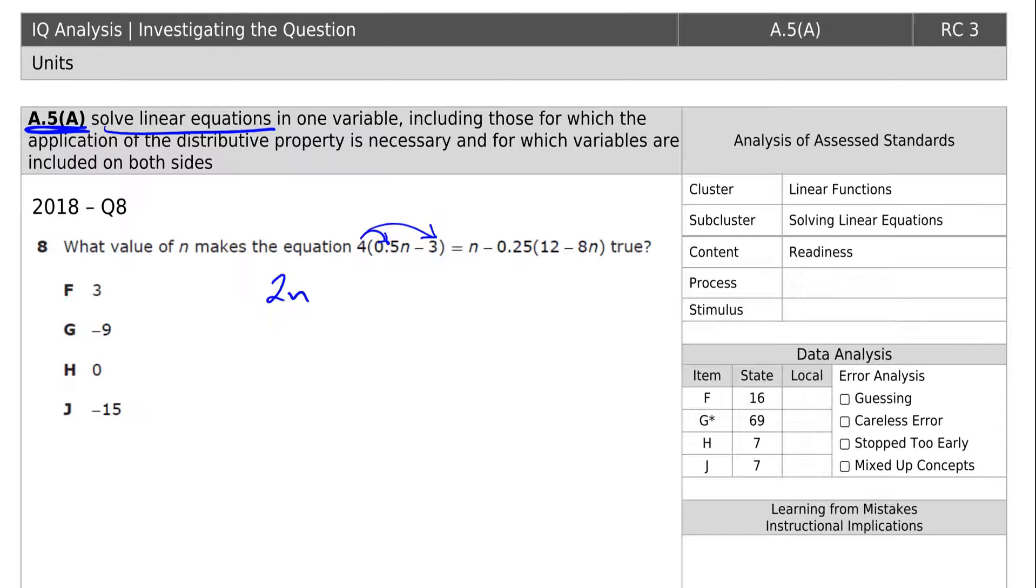Of course, you'll have your calculators, so you could type that into your calculator and get an answer. 4 times negative 3 is negative 12 equals n.